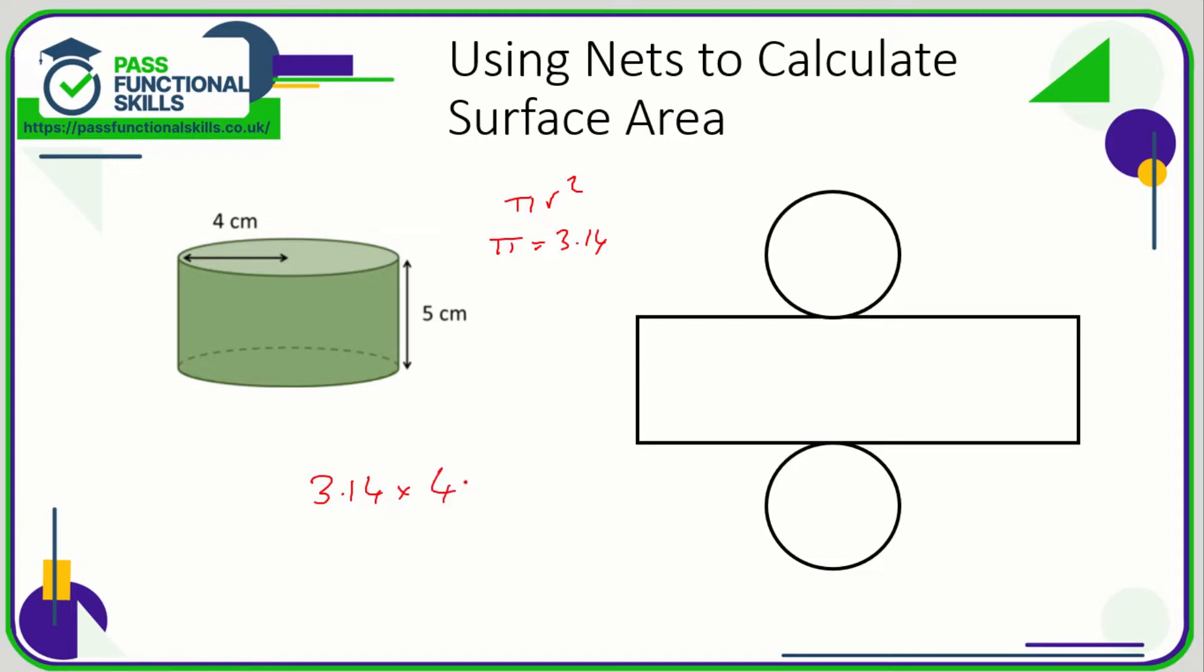It's going to be 3.14 multiplied by the radius, which is four, times four. But because there's two circles, we might as well multiply by two and do all of this calculation in one go. So 3.14 times four times four times two, that comes to a total of 100.48, and this is for both circles. Now we just need to work out the area of the rectangle.